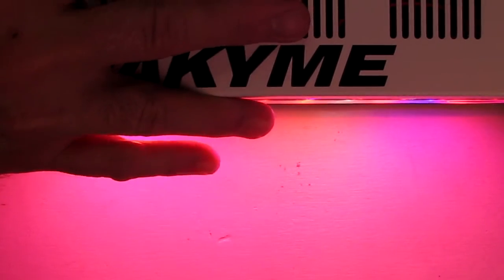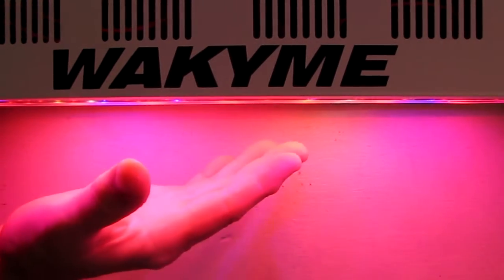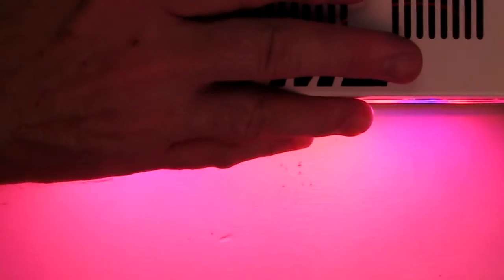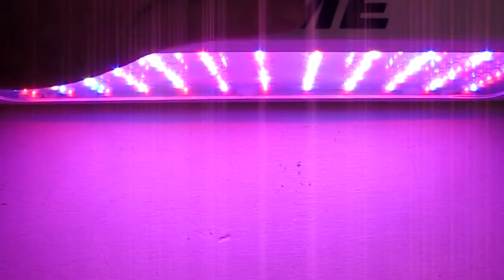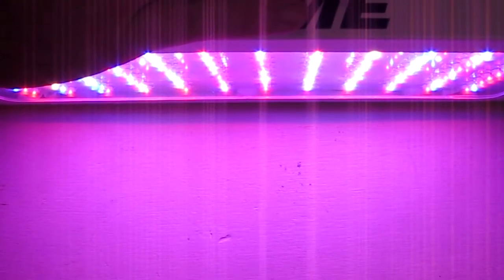The fans are also adjusting the amount of cooling that it's using. So we're going to put this on veg and bloom, and we're going to let it run for about 25 to 30 minutes, and now we're going to do some thermal tests on it.